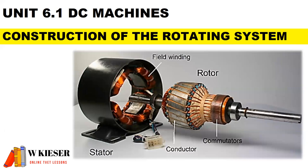Here we have the armature conductors, which are slotted inside the armature core and form part of the rotating system. So just to wrap that up: we have the field windings, which is the stationary system, and we have the armature conductors, which is the rotating system.